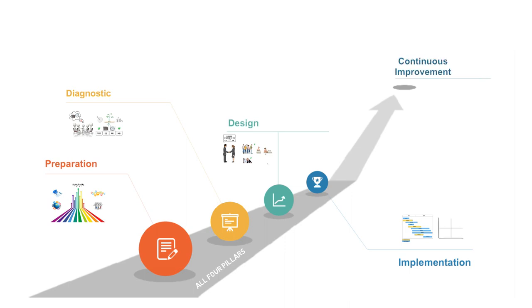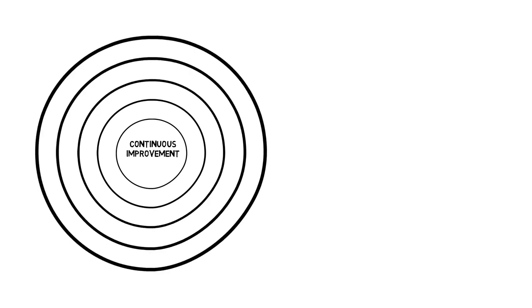Continuous improvement. This phase stays at the core of the Lean transformation, and even if it is the last phase from the chronological point of view, it is in fact the ultimate purpose of Lean.